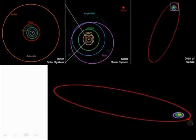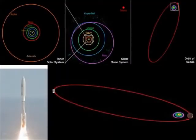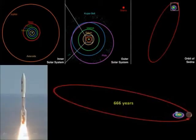New Horizons will take more than 600 years to travel from one end of our solar system to the other.